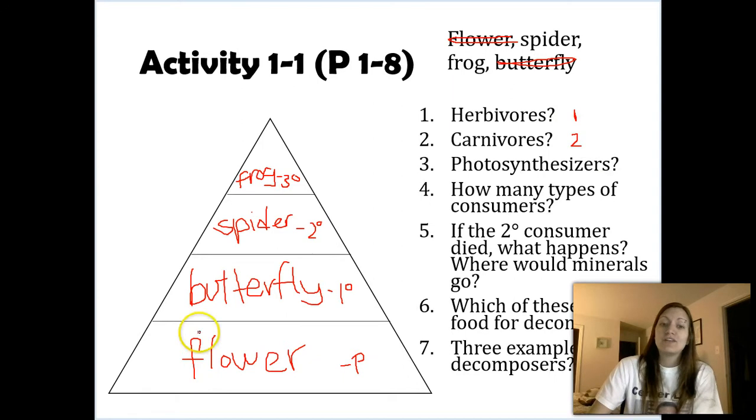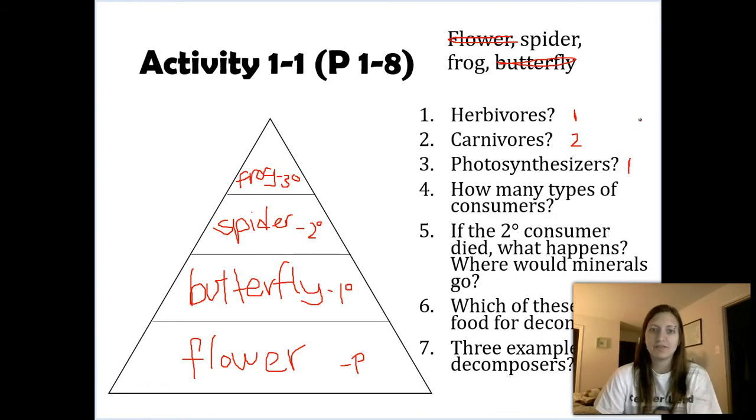And then in this case, we just have one photosynthesizer, our flowers. Now it asks, how many types of consumers do we have? Well, in this case, we have three different types of consumers: primary consumer, secondary consumer, and tertiary consumer. Producers are photosynthesizers, so just make sure you know both of those terms: photosynthesizers, plants, producers, all interchangeable.